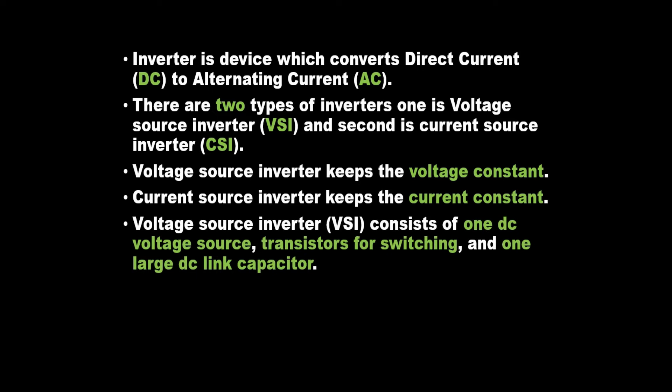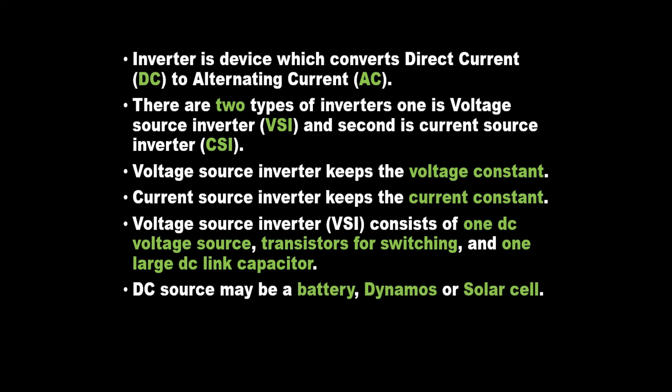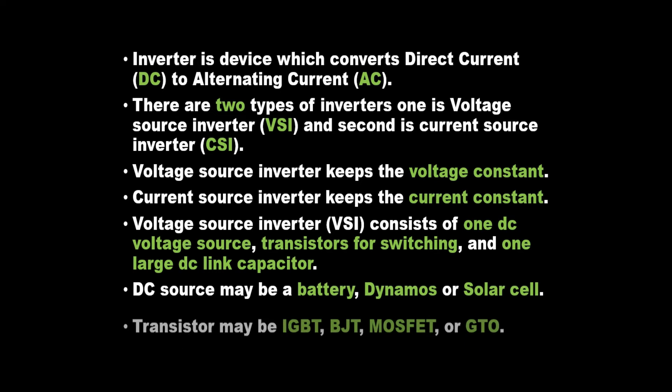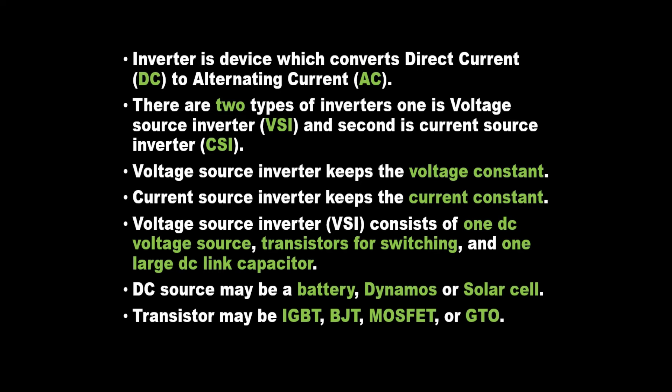Voltage source inverter, VSI, consists of one DC voltage source, transistors for switching, and one large DC link capacitor. The DC source may be a battery, dynamo, or solar cell. The transistor may be an IGBT, BJT, MOSFET, or GTO.